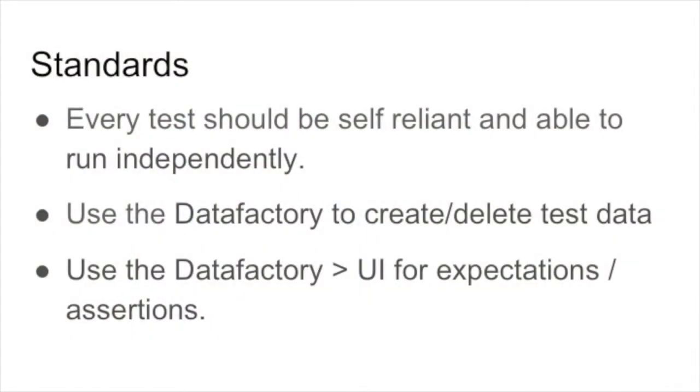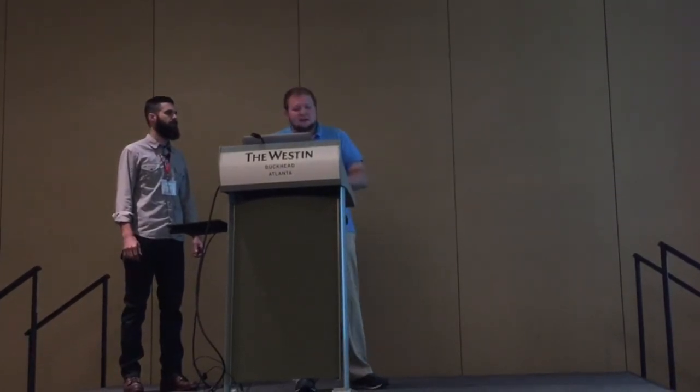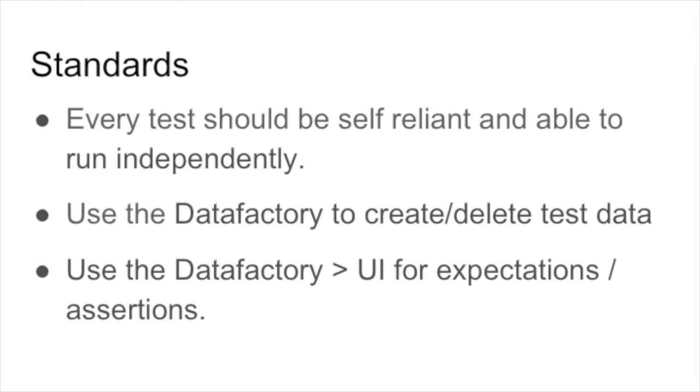One big standard: every test should be self-reliant and able to run independently. Now we have hundreds of tests and every test sets up its own data using the Data Factory. We also use the Data Factory to create and delete test data — we start a test, create data, test against it, then delete it so it doesn't junk up the database. Because we have the Data Factory, for assertions we prefer to check the database directly rather than screen-scraping a webpage — if a value is in the database, we trust the UI will display it properly.